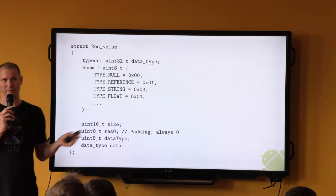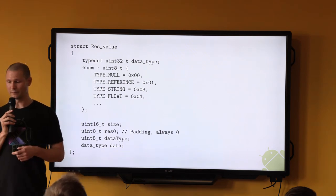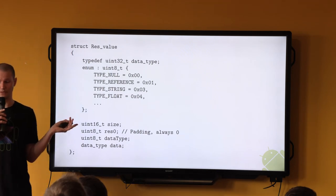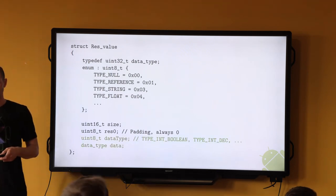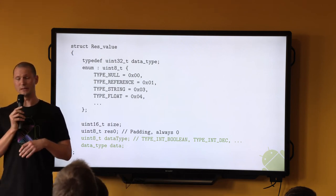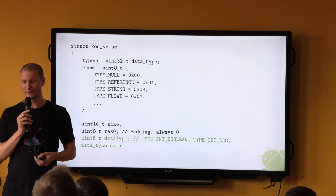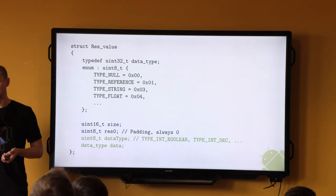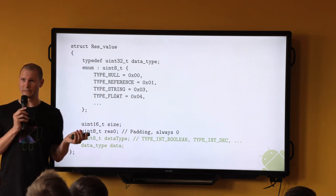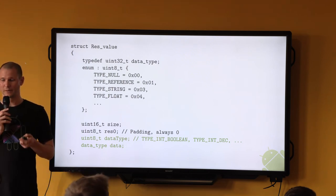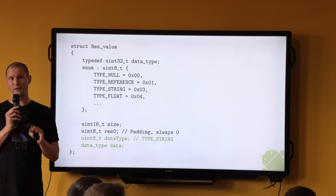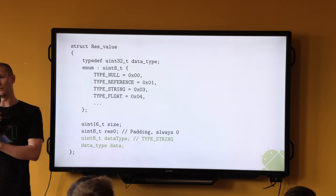In the resource blob — that binary hash map we talked about at the very beginning — the resource value is stored using a specific structure. The data type tells us which type of resource we're looking at, like if it's an integer or a string, and the data field contains the value. For simple types like integers and booleans, the four bytes in data are sufficient to encode the entire value. But for more complex types like strings, it's actually an integer offset into another part of the binary blob where strings are stored.